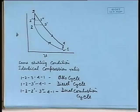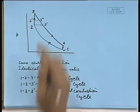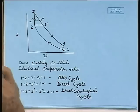We can see that the area of different cycles will be different. The maximum area we will get in the case of the Otto cycle, then dual combustion cycle, and then diesel cycle. So maximum output we will get from the Otto cycle, then dual combustion cycle, then diesel cycle — if we have the same compression ratio for all three cycles.